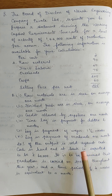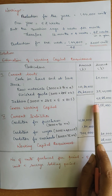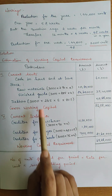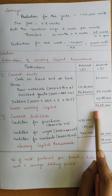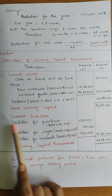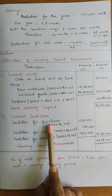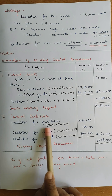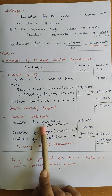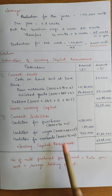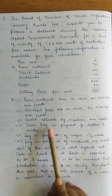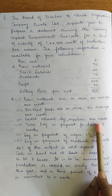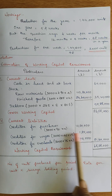So total current assets — gross working capital — adding all current assets = 86,88,000 rupees. Second, Roman Number II: Current Liabilities. First, creditors for purchases. Number of units per period = 3,000, into raw materials rate = 90 rupees, into credit allowed by suppliers = 1 month = 4 weeks. So creditors = 3,000 into 90 into 4 = 10,80,000 rupees.